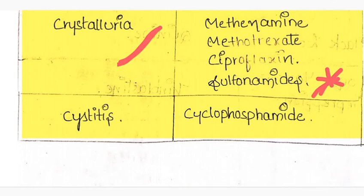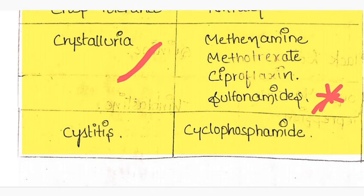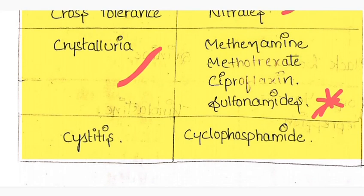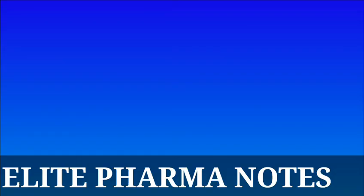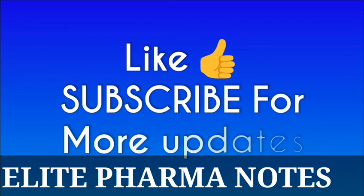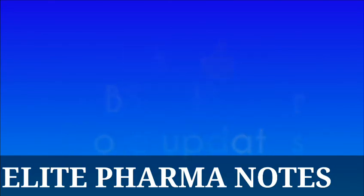Cystitis is caused by cyclophosphamide. This is also one of the important points for GPT orientation.